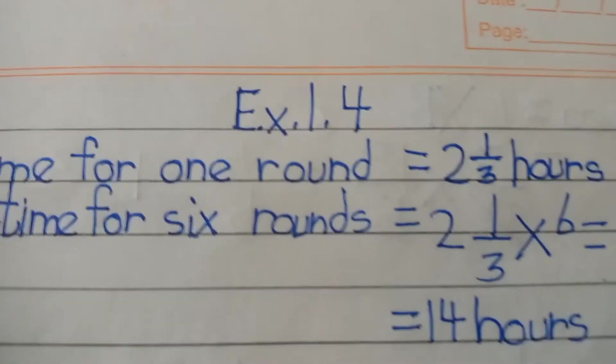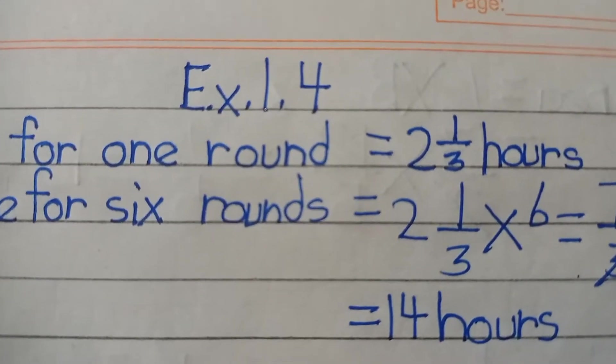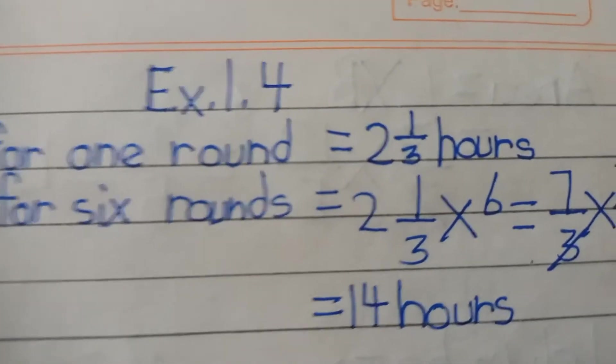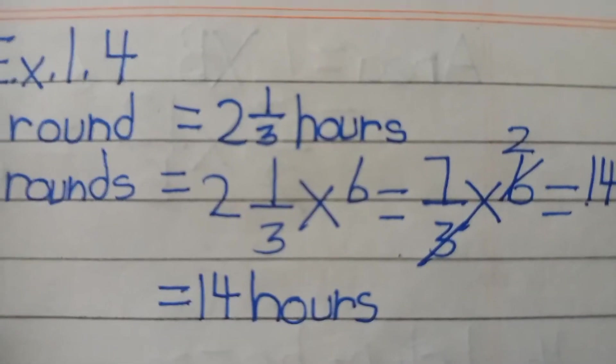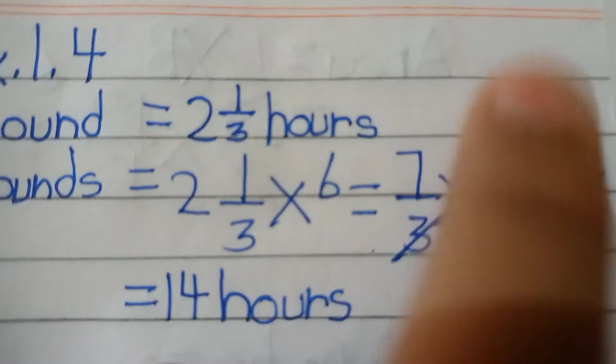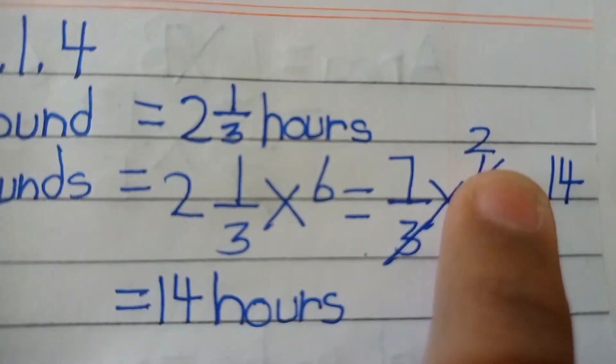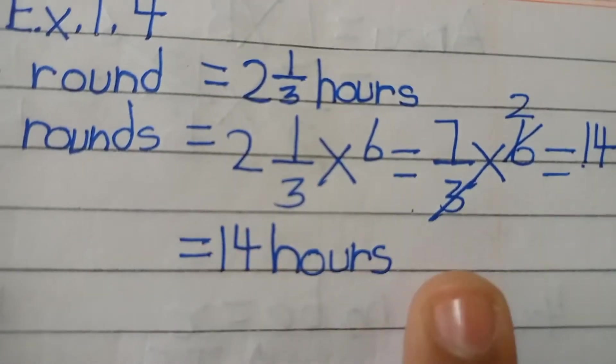Sabse pehle time for 1 round wo aayega 2 whole 1 over 3 hours. Time for 6 rounds kitna ho jayega: 2 whole 1 over 3 into 6. So 7 over 3 into 6, 3 aur 6 ke saath kat jayega, 6 ki jagah par aayega 2, and 7 into 2 kitna ho jayega? 14. So hamara answer aayega 14 hours.